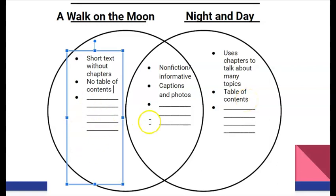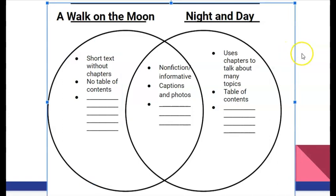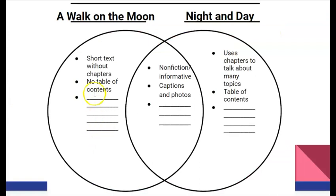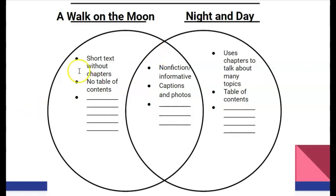Ms. Kelly left three blank spots. That's your job today — be thinking about what is different about A Walk on the Moon and Night and Day, and how are they similar? Ms. Kelly has come up with a question to help you think about what you could add to the Venn diagram. What does A Walk on the Moon teach us about? What does Night and Day teach us about? And do they have anything in common? Look carefully at the pictures and I bet you're going to see something that both stories talk about or teach us about. That'll be your literacy work for the day. I'm going to keep going to writing, but don't forget to send me this work.